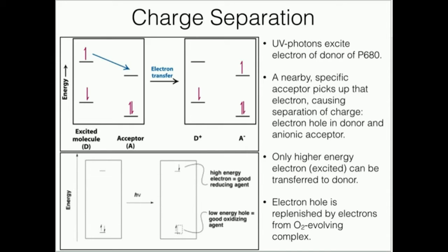The acceptor A-, this is our pheophyton, has now been reduced. It's now A-, whereas before the transfer it was just A.